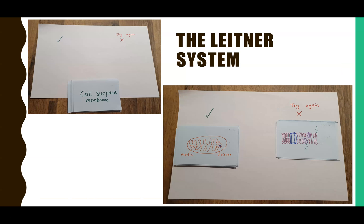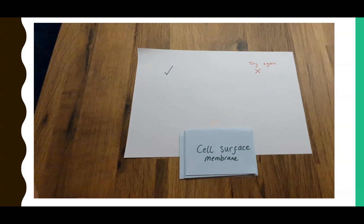That also introduces the Leitner system — a process for using your flashcards efficiently rather than just flicking through the whole pack. You sift between which cards you can remember with ease, meaning the connections are already there, and which you're struggling with — those are the ones you should focus your practice time on.